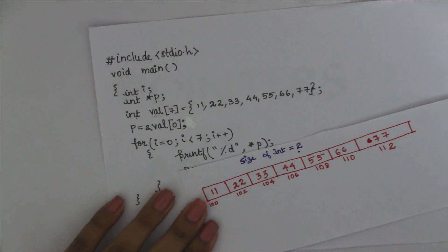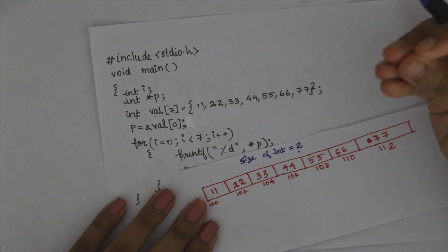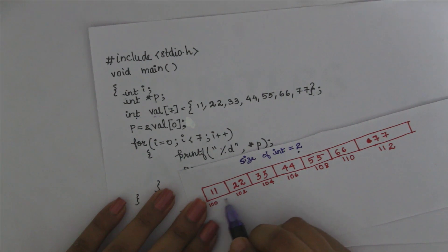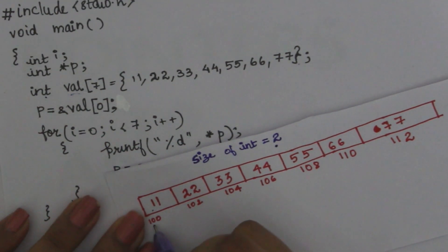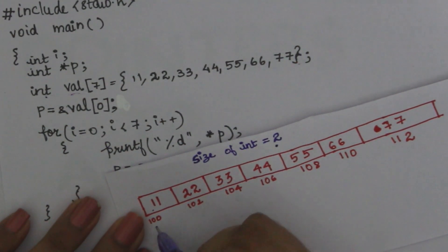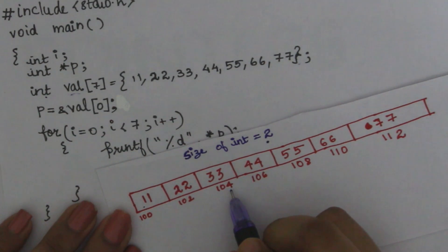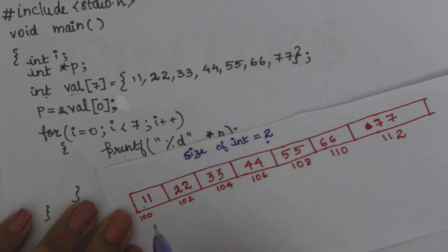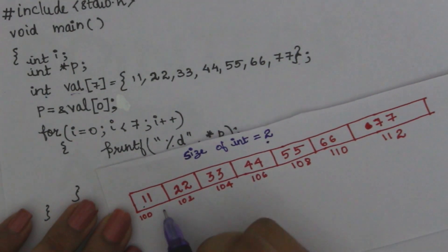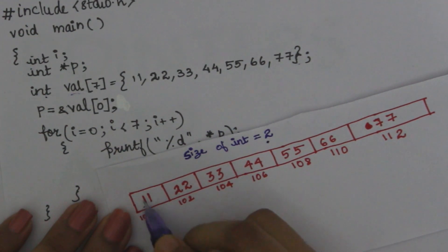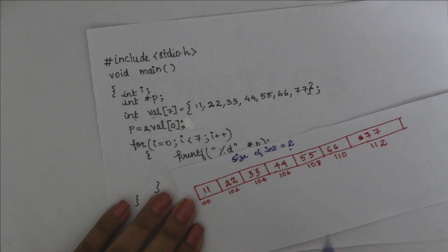That's why — since we have an integer — we have two bytes or four bytes per element. The first value is 100, and its location is 102, and the next value's location is 104. An array is a consecutive memory location. Then you can see 101, and consecutive one stores values. I will show you two bytes — you can store a value in two bytes.